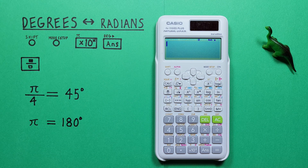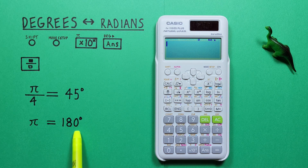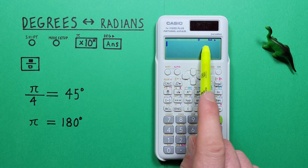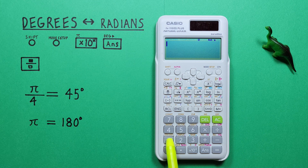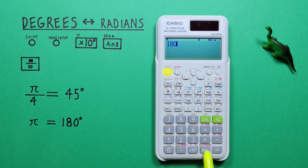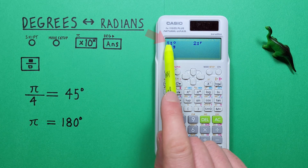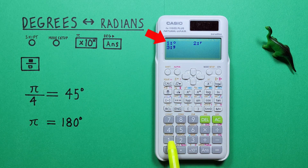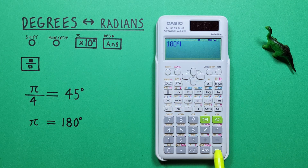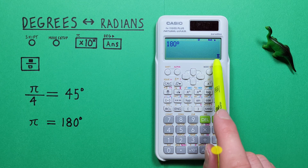One more example: let's say we were given 180 degrees and wanted to convert that to radians. Since we're already in radians mode, we go ahead and enter 180, press shift, the answer key with the shift function of DRG, and choose number one for degrees. There we go — 180 degrees equals pi.